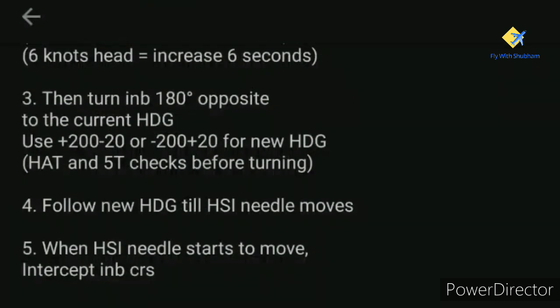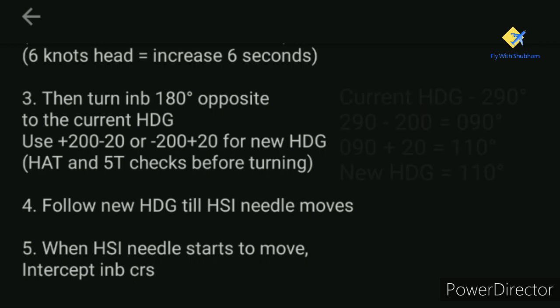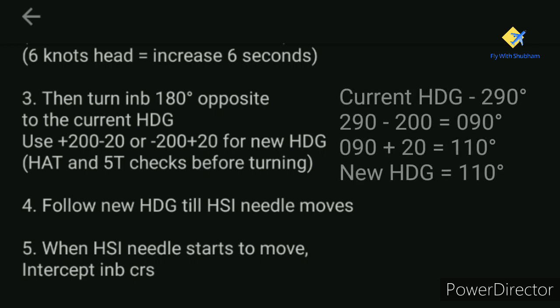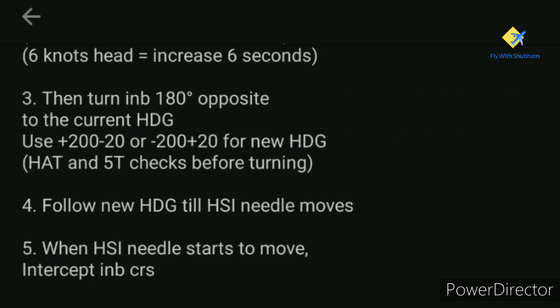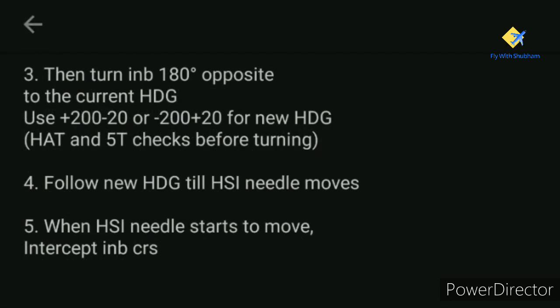There is a formula to calculate the 180-degree opposite heading: plus 200 minus 20, or minus 200 plus 20, depending on your current heading. For a current heading of 290: 290 minus 200 is 090, plus 20 is 110. So the new heading after the 180-degree turn will be 110. You follow heading 110 until the HSI needle starts to move, then intercept the inbound course of 065.